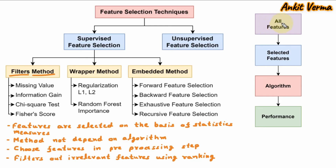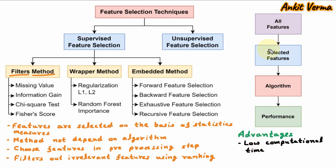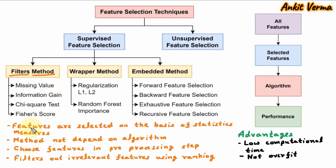The features which are most important based on rank are selected. The advantages of the filter method: first, it needs low computational time because it is very simple and works step by step. Second, it does not overfit — it only uses selected and important features. There are various techniques under the filter method: missing value ratio, information gain, chi-square test, and Fischer's score. That is all about the filter method.